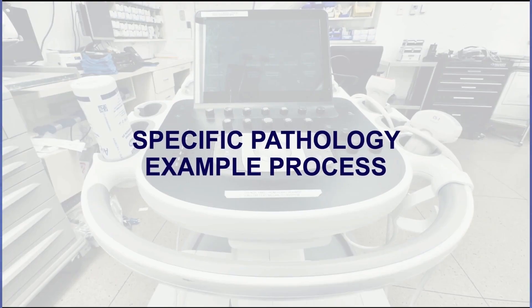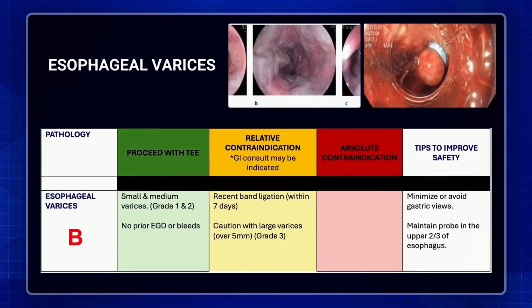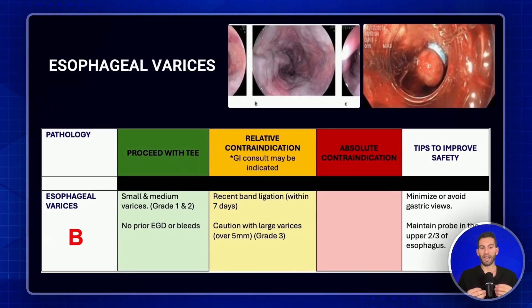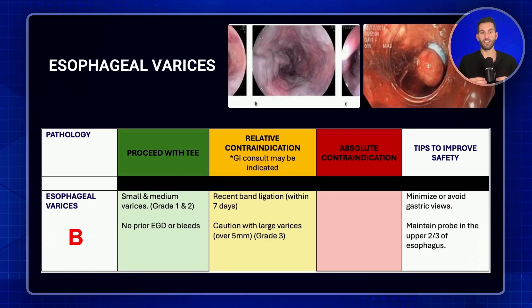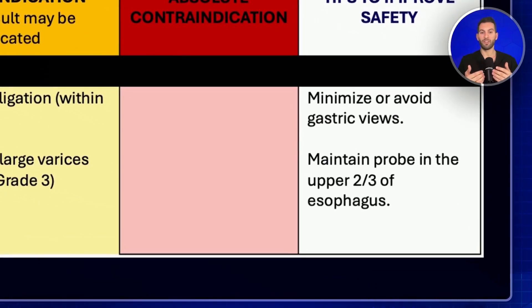Now let's walk through specific pathology. I want to give credit to Dr. Kelly Mishra, a cardiothoracic anesthesiologist who shared this framework with me. Starting with esophageal varices: using the PROBE acronym, this patient is a B — a bleeding risk. Ask how big the varices are and whether the patient has had prior procedures on them. Steps include minimizing lower esophageal views and maintaining the probe in the upper two-thirds of the esophagus, where varices tend not to be.